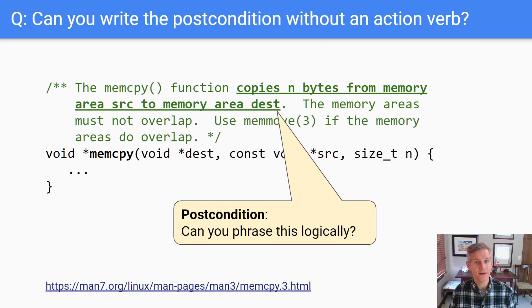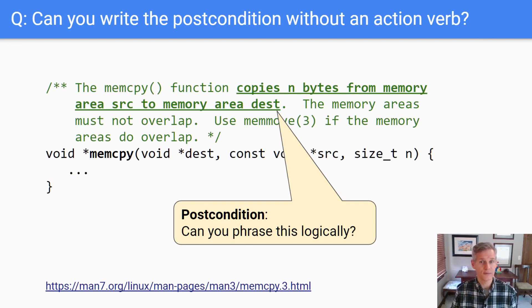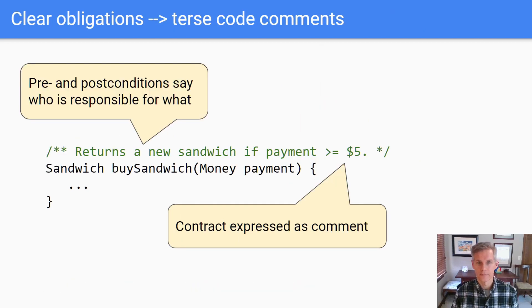That tells us what the implementation does, but it doesn't tell us what must be true when it's finished. As an exercise, try to phrase this postcondition as a logical test. Here's a hint: ask yourself at the end, what must be equal to what if this is a reasonable implementation of memcpy.